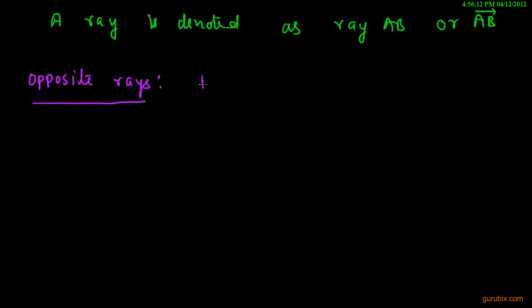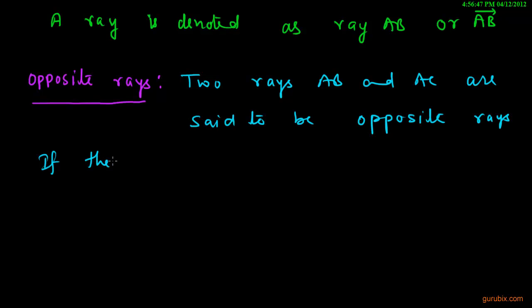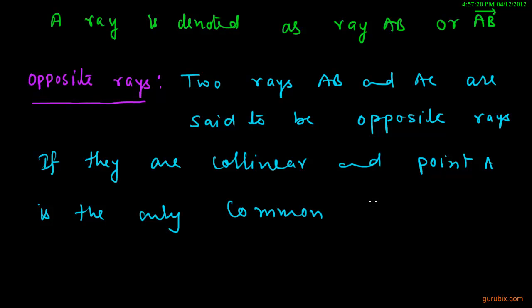We can define it like this: These two rays AB and AC are said to be opposite rays if they are collinear, and point A is the only common point of the two rays.